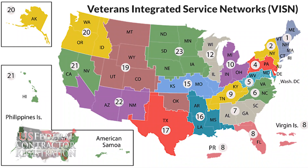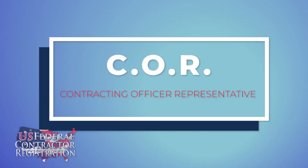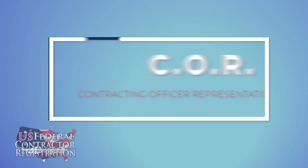Look at your local VISN, whether it be 8 or 23, and find out who the contacts are in the various departments. It would also be a good idea to get in contact with the CORs, which are the contracting officers' representatives, who are typically in the end user's department and may actually be the end user who is submitting the request for services or products.